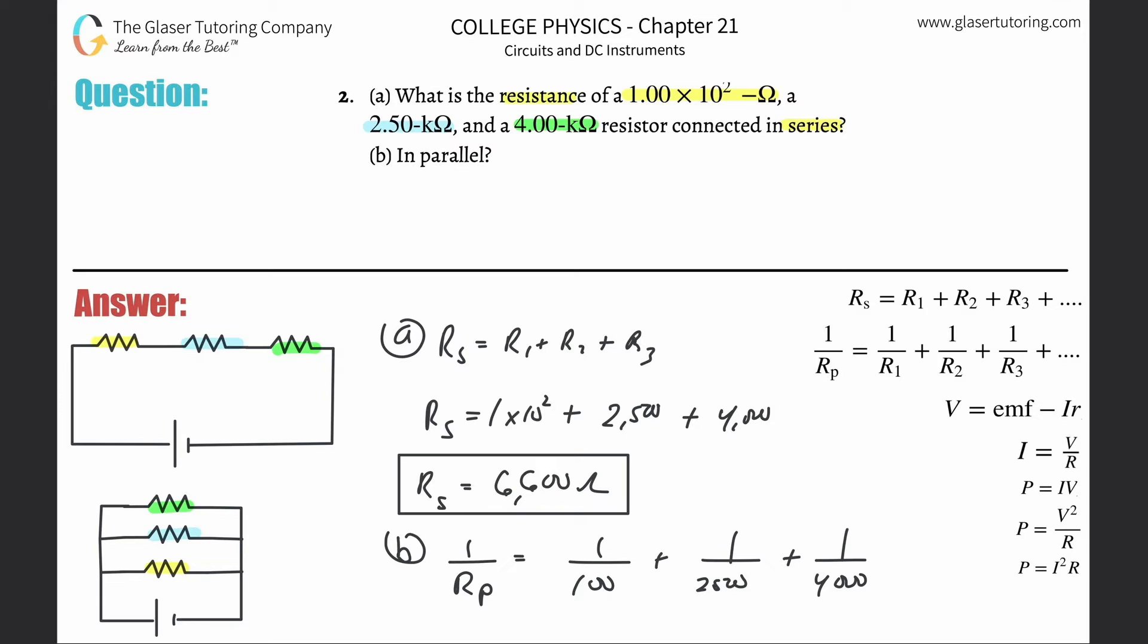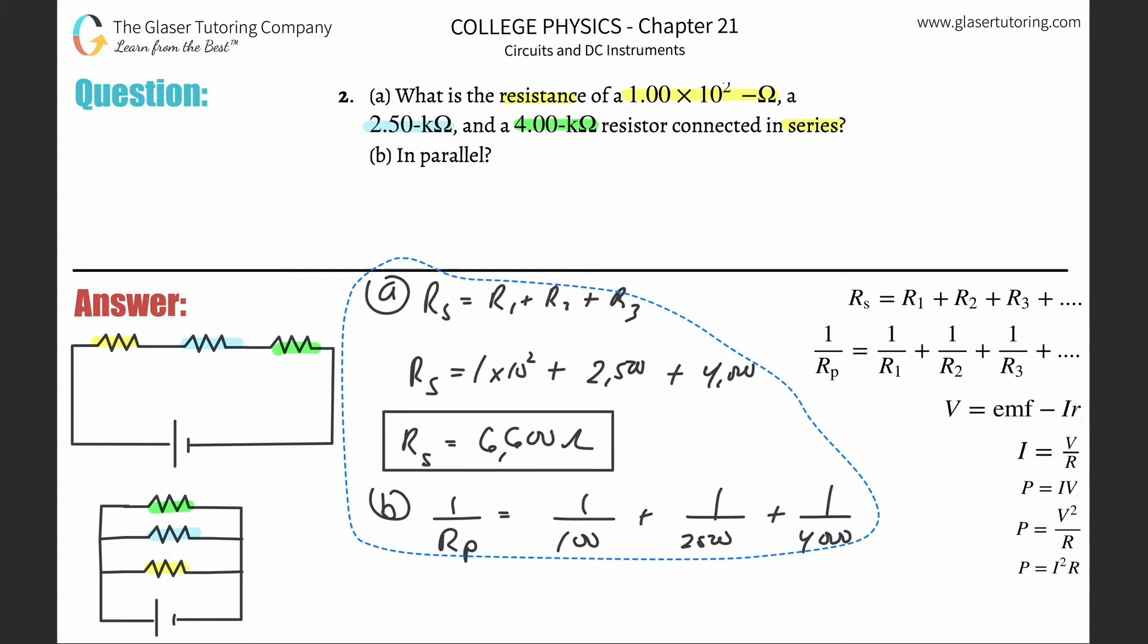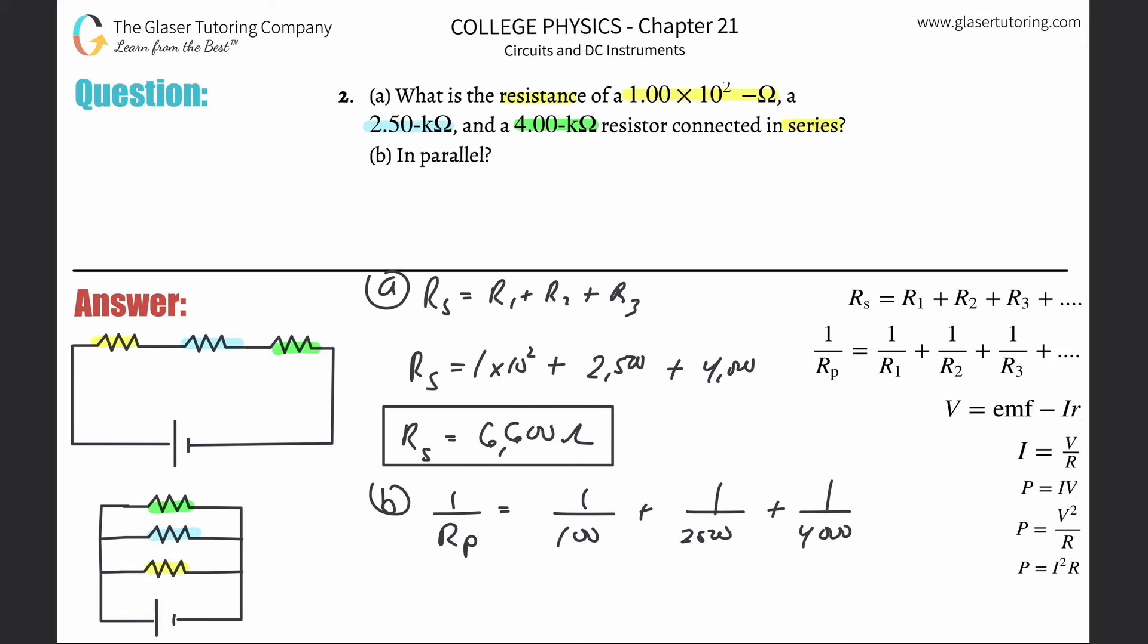You're going to get a value of about, let's move this up so we have a little more space, you're going to get approximately - careful with how you solve for this - 1/Rp will equal 0.01065. That is not the answer yet because we have 1 over the resistance in parallel. We don't want to know 1 over it, we want to know just Rp.